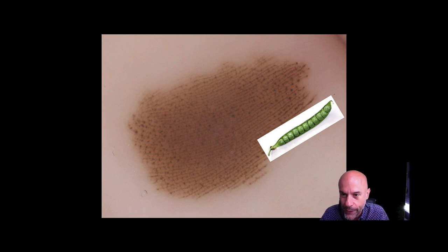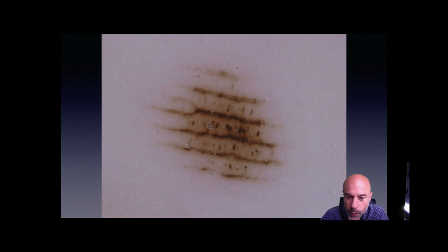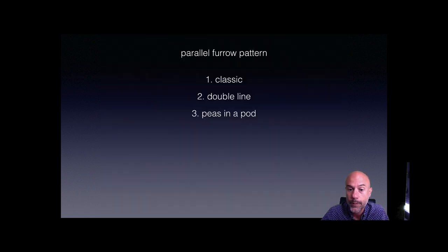'Peas in a pod' is a metaphoric term used to describe this pattern, and it is associated with congenital acral nevi. One more example at higher magnification: the pattern is parallel furrow. The pigmented lines are located on the furrows, and on the ridge we can see brown dots located precisely on the openings of the eccrine ducts. Peas in a pod is the third variation of the parallel furrow pattern.